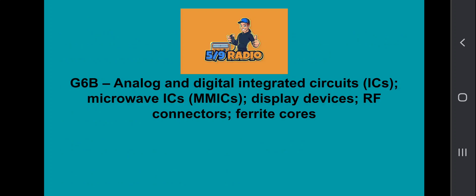G6B covers analog and digital integrated circuits, microwave ICs, display devices, RF connectors, and ferrite cores.